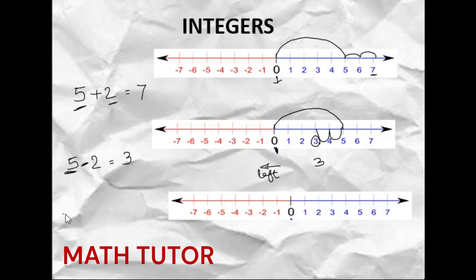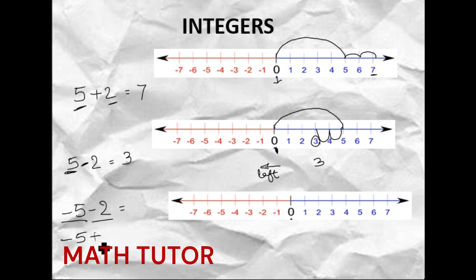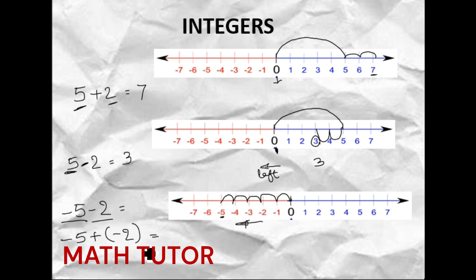Let us see one more example with both negative numbers. We have minus 5 and then minus 2. This is a subtraction operation, and it can be written as addition: minus 5 plus minus 2. Minus 5 means start from 0 and go towards the left side of the number line — 1, 2, 3, 4, minus 5. And plus of minus 2 means you add both negative numbers, going in the same left direction for 2 more jumps — 1 and 2. So that equals minus 7.